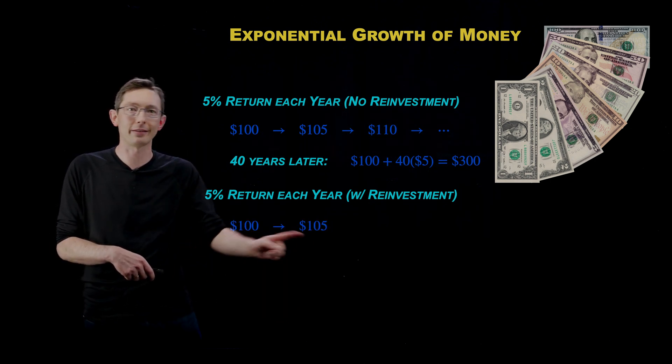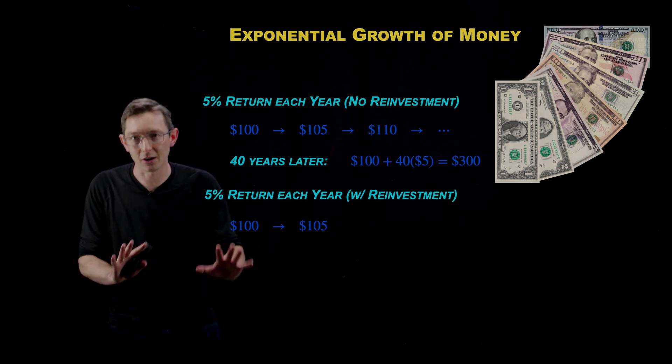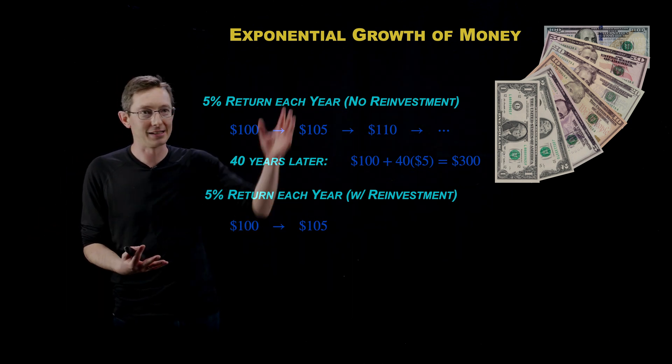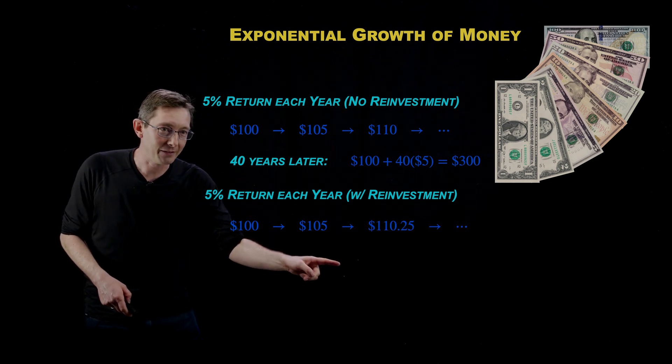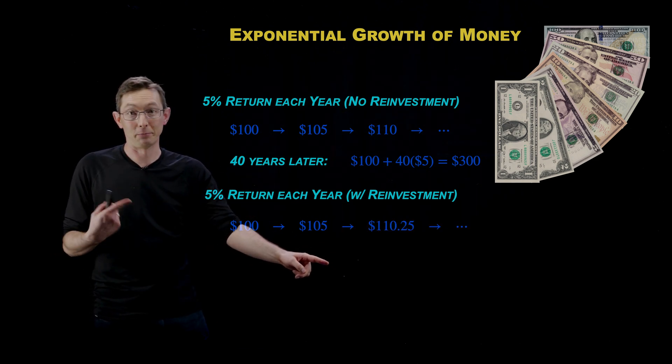So in the first year, nothing changes. I go from $100 to $105. I made $5. Exactly the same. But after the second year, that $5 is also getting 5% interest. And so instead of $110,